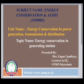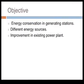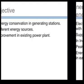Welcome to online classes on ECA, that is Energy Conservation and Audit. We will be discussing chapter number 4. Our topic for today is Energy Conservation in Generating Stations. Objectives which will be covered today are energy conservation in generating stations, different kinds of energy sources where we can save energy, and how we can improve the existing power plant for energy conservation.